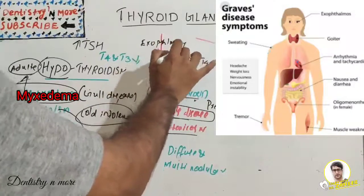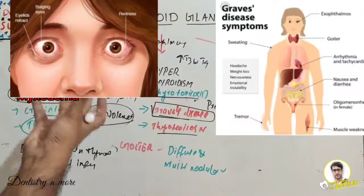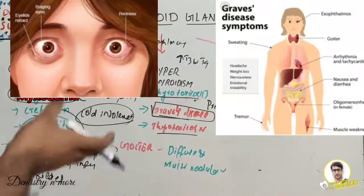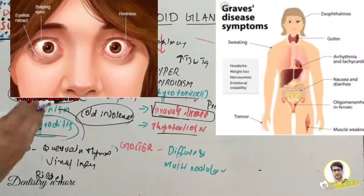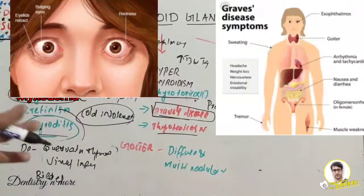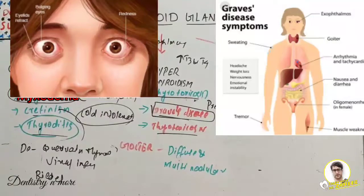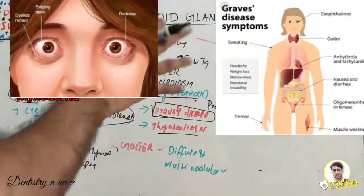Exophthalmos is the protrusion of the eyeball with visibility of sclera between the lower lid and cornea. It is due to retro-orbital connective tissue and ocular muscles being increased, resulting in a protruded appearance. There will be inflammatory edema, T-cell infiltration, and fatty infiltration, all leading to bulging of the eye outward.